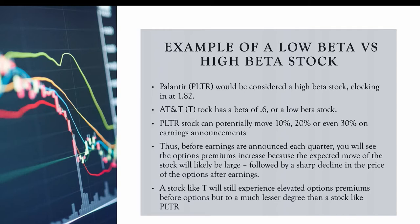As I showed in the cash-secured put lesson and the wheel strategy, when you look at options premiums for a stock like Palantir you can see how much you're getting for a relatively small capital commitment — you can generate good income from a low capital commitment. But the risk is that the stock makes a big move. Before earnings are announced each quarter, you're going to see options premiums increase because the expected move of the stock will likely be large, followed by a sharp decline in the price of the options after earnings.